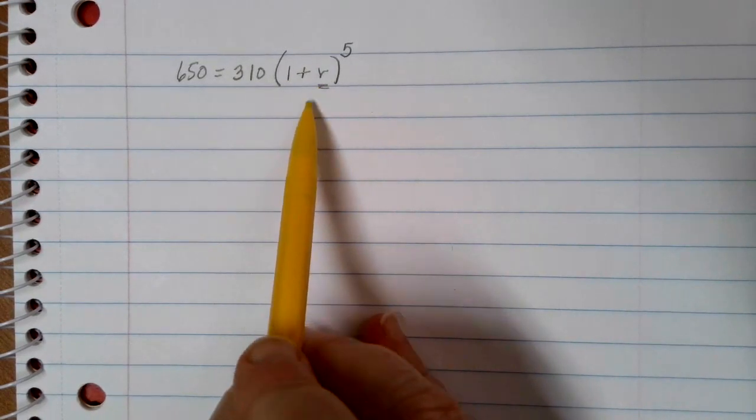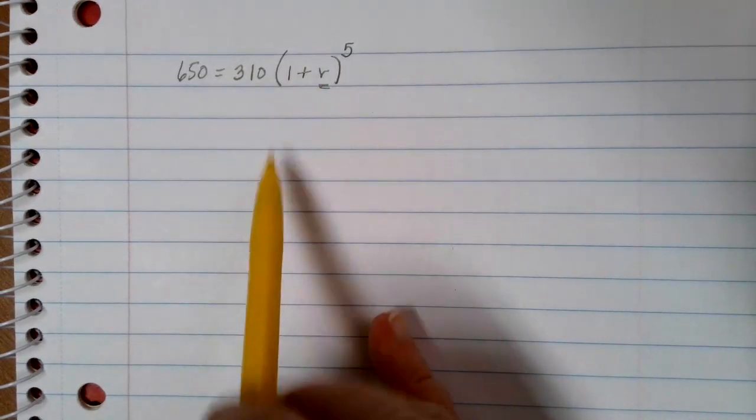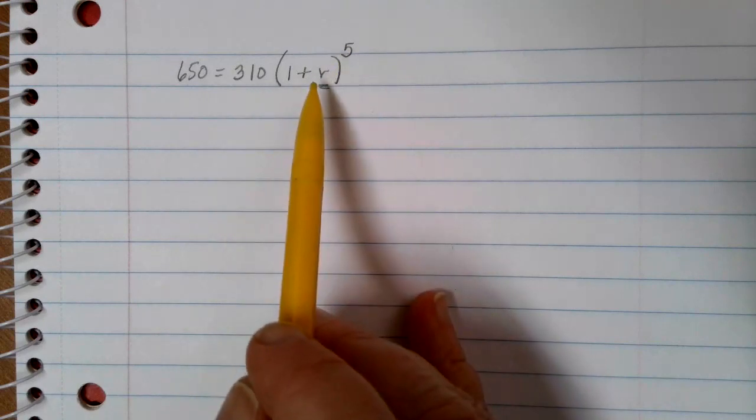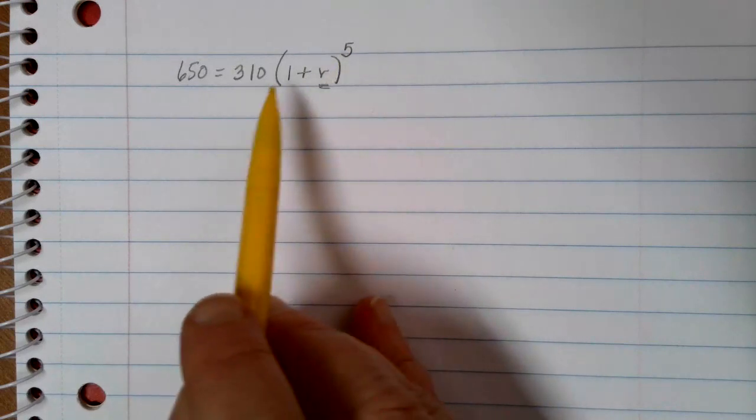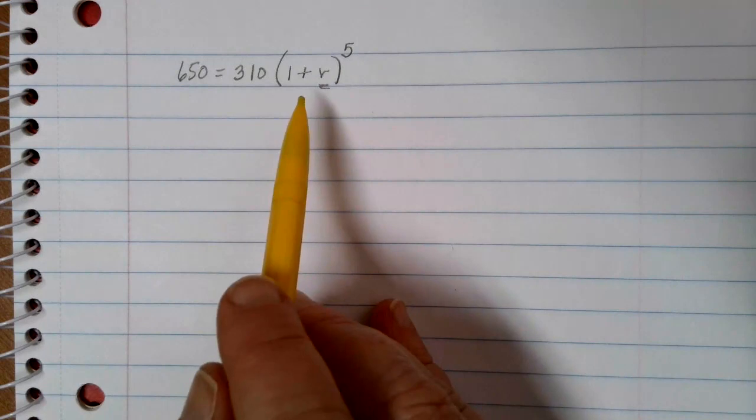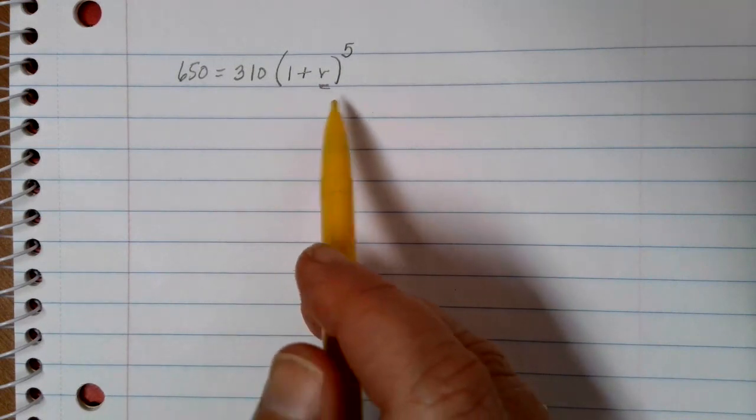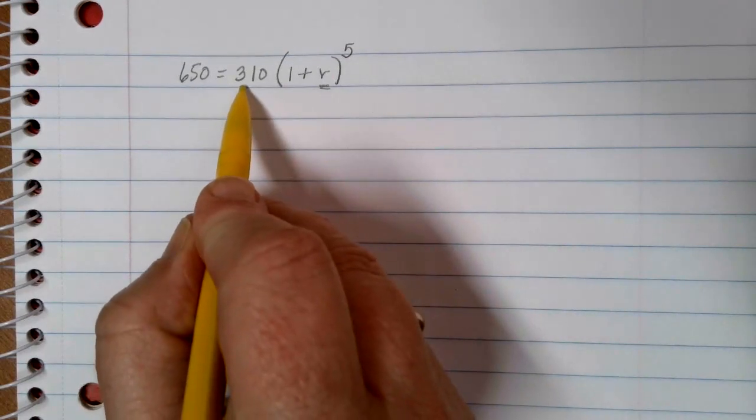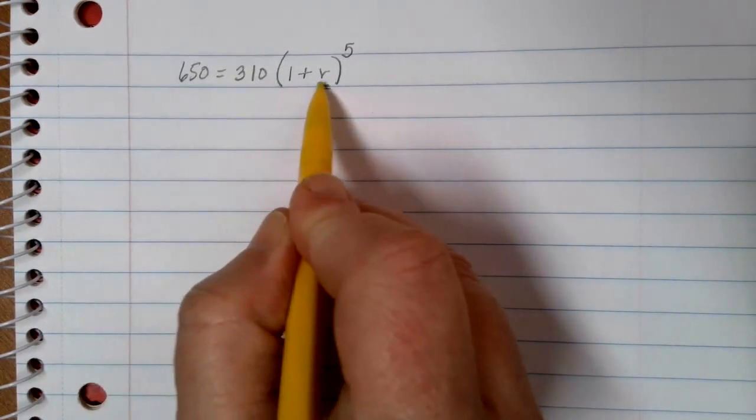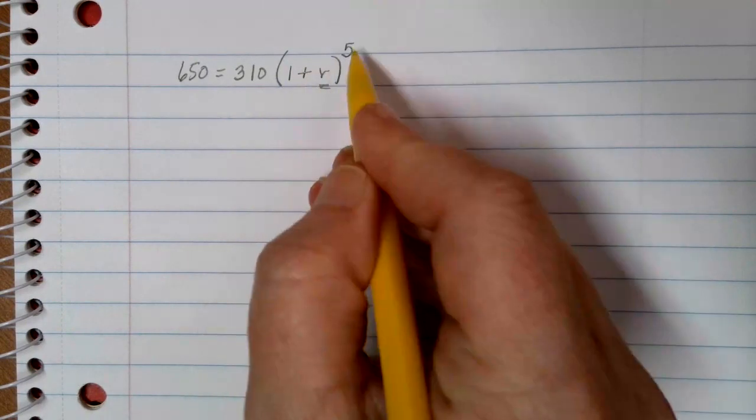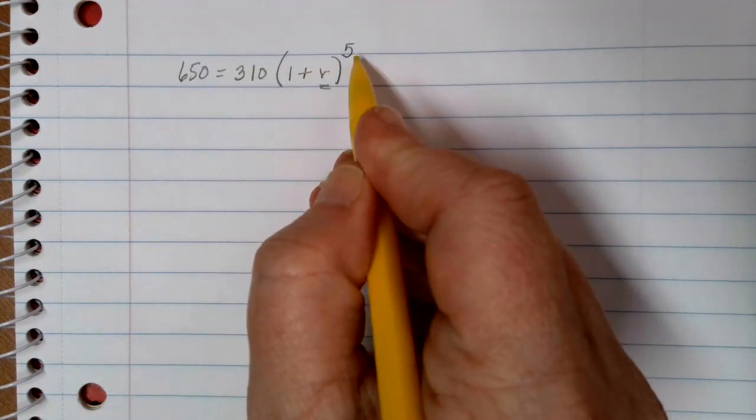So this is going to be a three-step equation to solve. I get rid of each of these numbers one at a time. The numbers that I get rid of have to be in the correct order. Basically, we're doing reverse order of operations. This number out here is being times. This 1 is being added but it's inside the parentheses, and this 5 is in the exponent position.